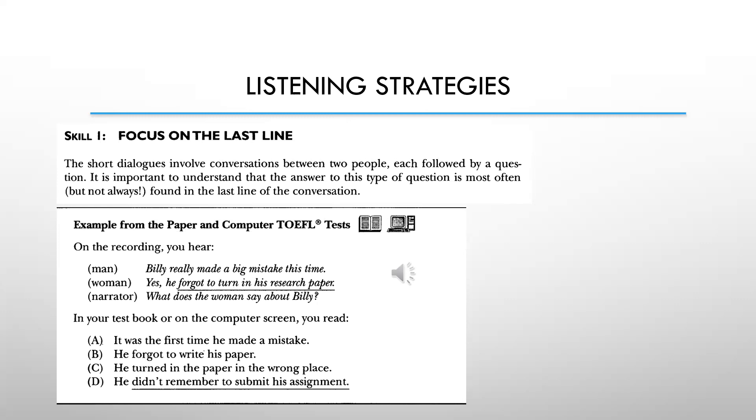Sedangkan kalau yang A nya 'It was the first time he made a mistake,' itu tidak sesuai dengan yang dimaksud. Nah jadi kata mistake ini memang ada pada pembicaran yang pertama, tapi itu justru bukan jawabannya. Yang B juga meskipun ada kata forgot sama, tetapi bukan itu jawabannya. 'He forgot to write his paper'—dia lupa menulis papernya, karena yang dimaksud dalam pembicaraan yang kedua itu lupa menyerahkan bukan lupa menulis paper. Jadi bukan jawaban yang B. Yang C juga bukan, 'He turned in the paper in the wrong place,' karena di dalam pembicaraan short dialogues itu tidak dibahas mengenai the wrong place. Okay, so that's how we try to choose the best answer from the multiple choices dalam listening comprehension yang short dialogues ini.